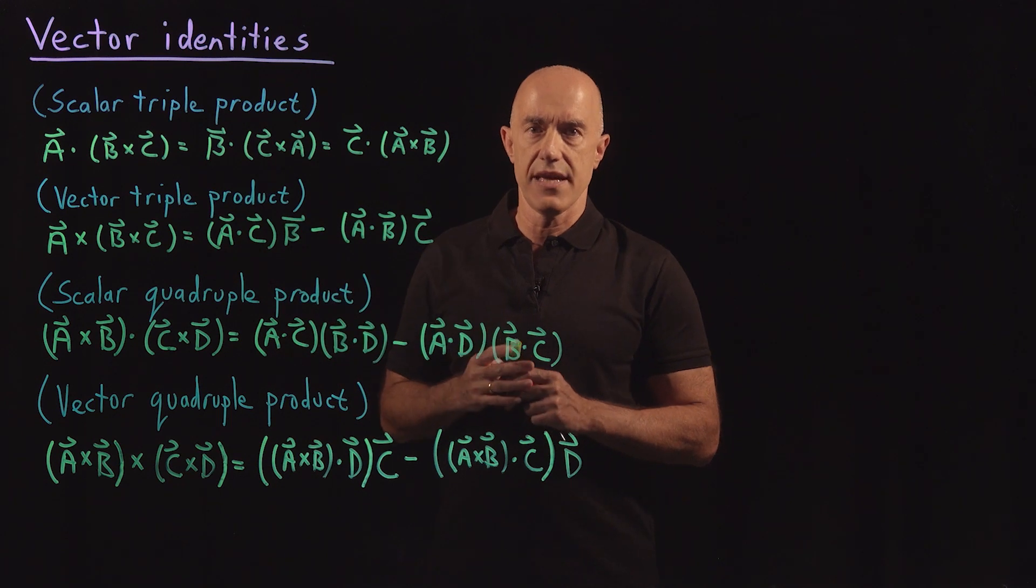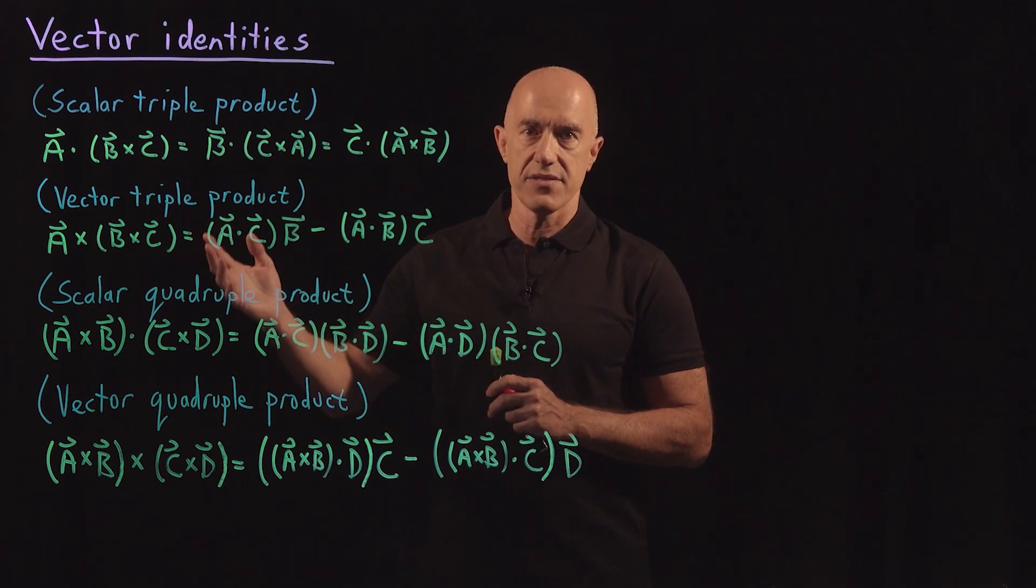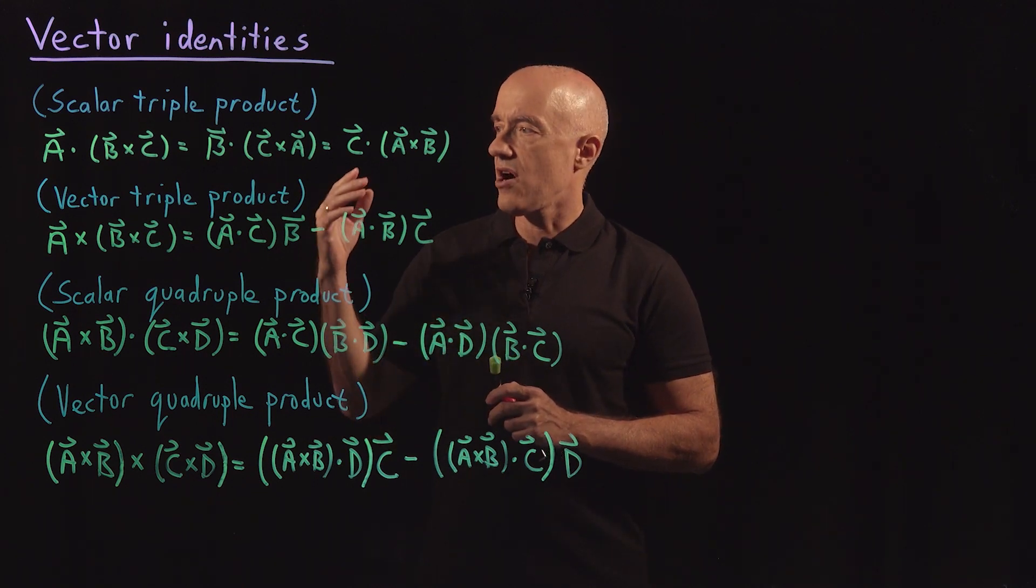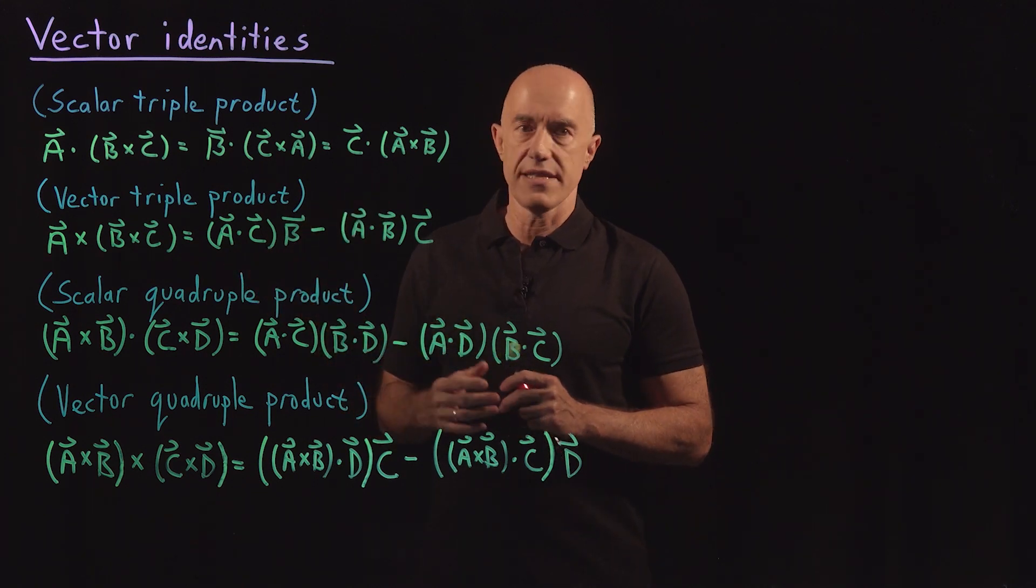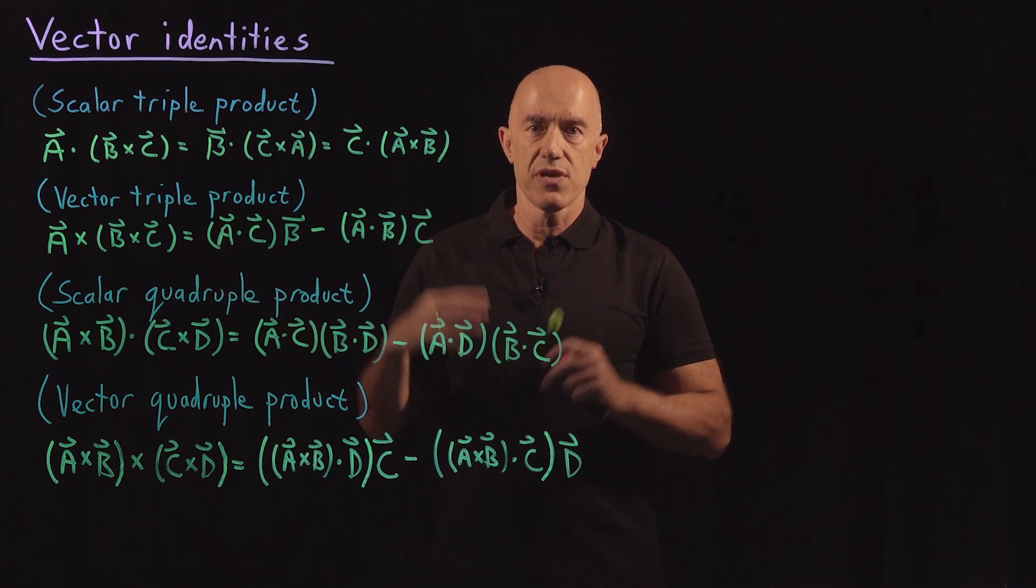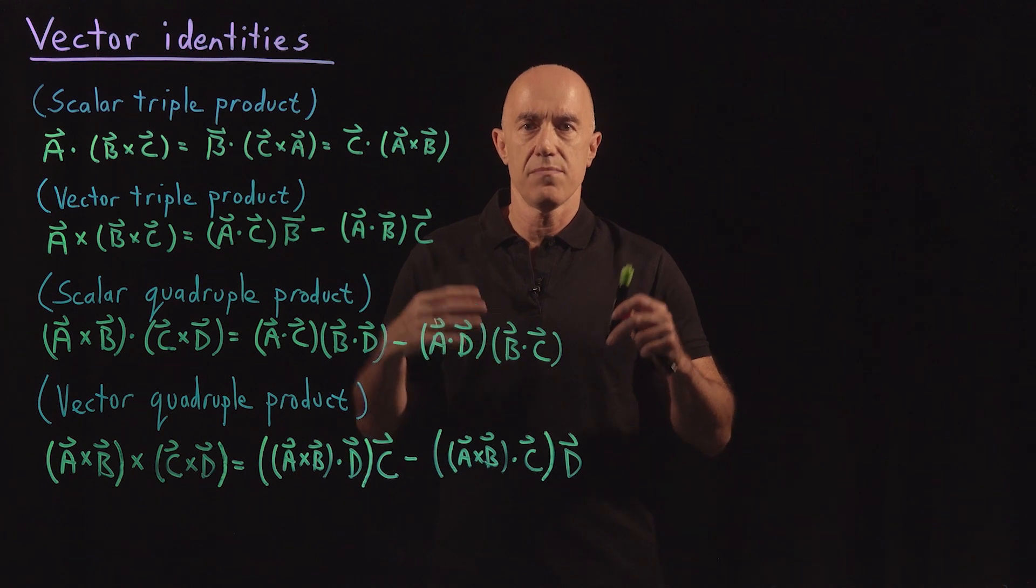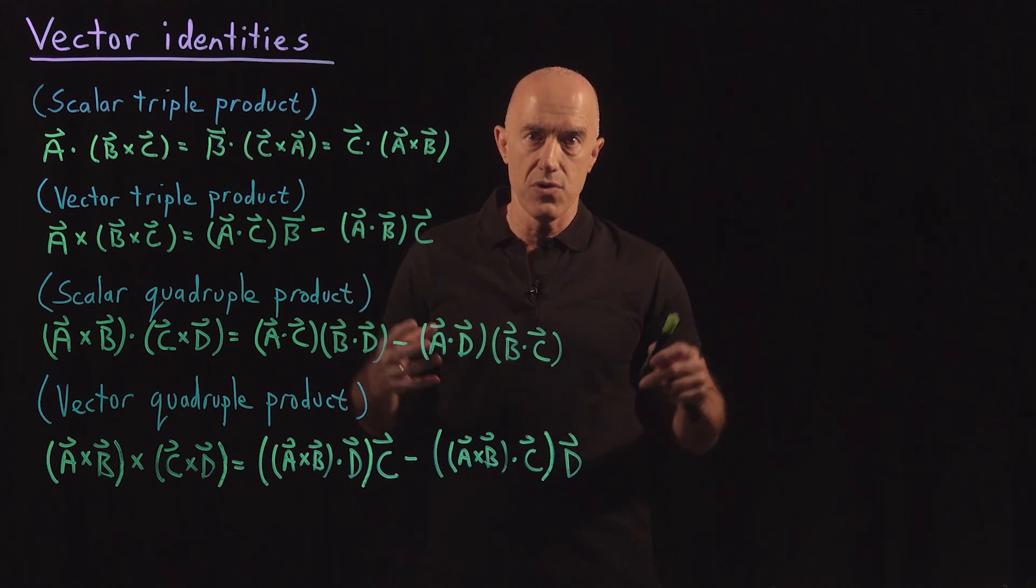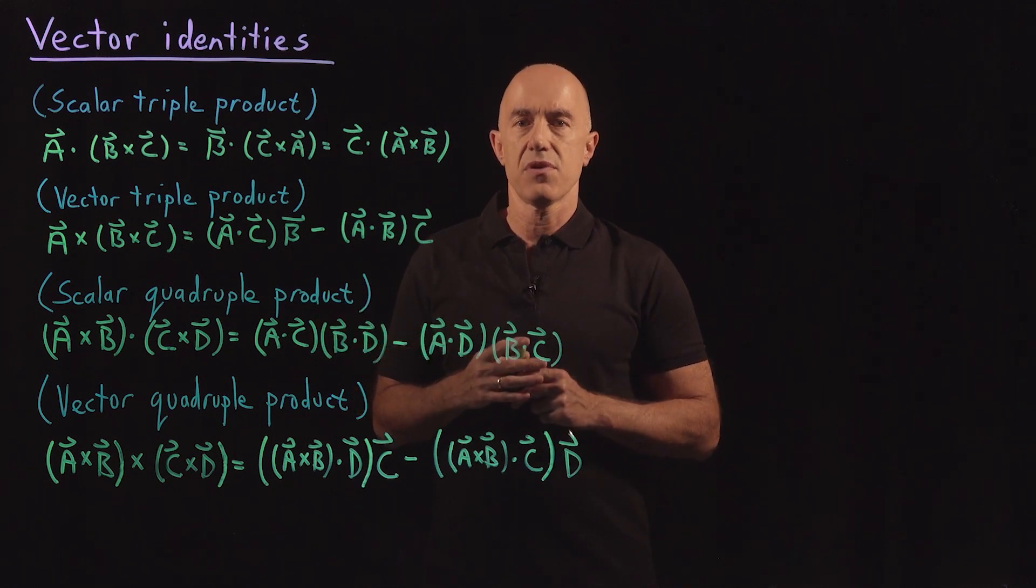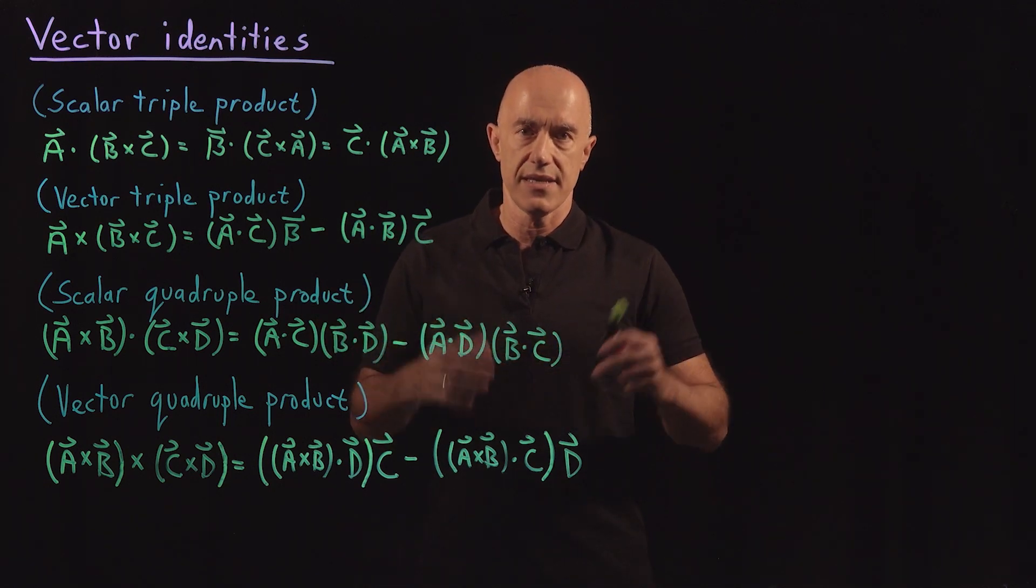There's two types of vector identities. There's scalar vector identities, where the left-hand side is a scalar and the right-hand side is a scalar. And there are vector vector identities, where the left-hand side's a vector and the right-hand side's a vector. So when two vectors are equal, it means that all of their components are equal. So that's essentially three equations. But we can solve them as a single equation.